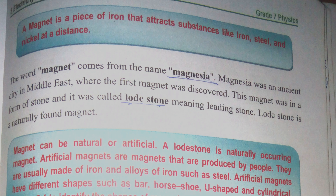Magnesia was an ancient city in the Middle East where the first magnet was discovered. This magnet was in the form of a stone and it was called Lodestone, meaning leading stone. Lodestone is a naturally found magnet.